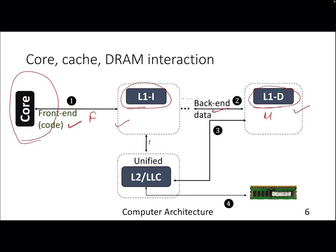Once you get a miss in L1 instruction cache or L1 data cache, you go to L2 or eventually to the LLC which is L3. Those caches are unified, meaning they store both instructions and data. Most of the time the code footprint is smaller compared to the data footprint. The working set of L1i — the code footprint — will more or less fit into L1i, unless you have high-end server code that may spill to L2 or LLC. So most of the time, the content of L2 and LLC is dominated by data.